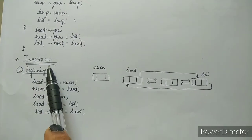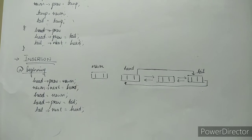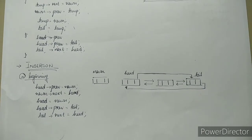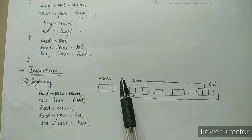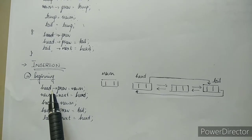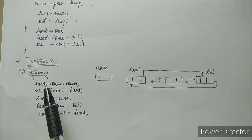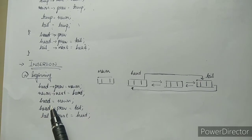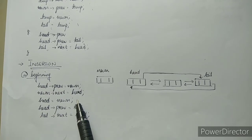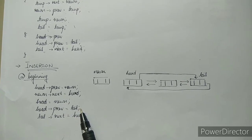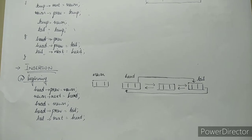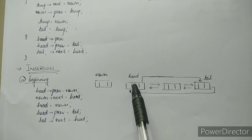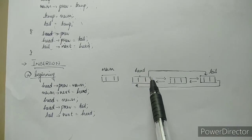Now let's see insertion at the beginning. Consider a linked list with head and tail as shown, and then we create a new node. To insert at the beginning: head's previous is new node, new node's next is head, head becomes new node, head's previous is tail, and tail's next is head.